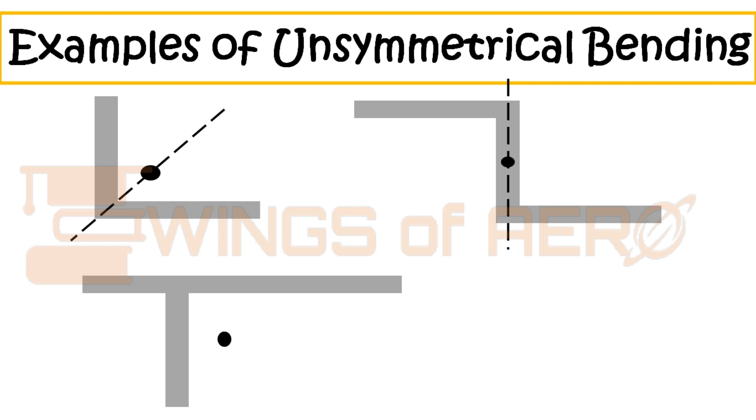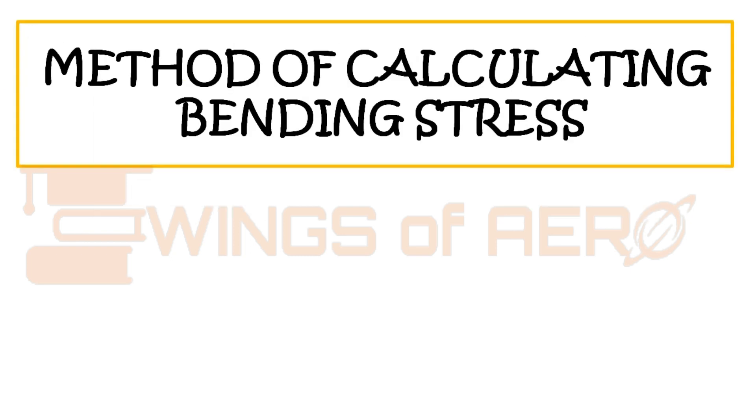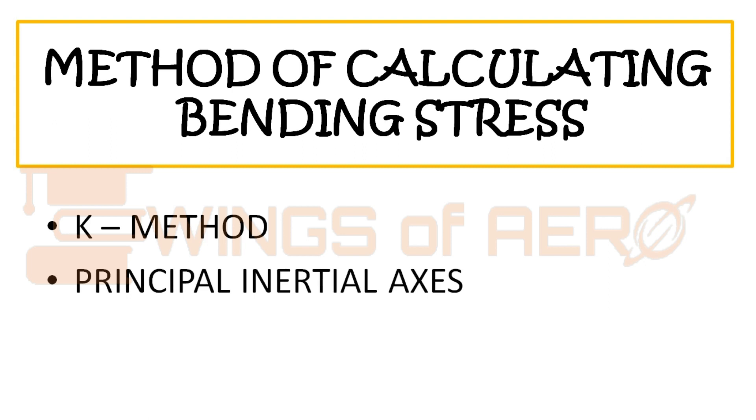Here are a few methods, three methods of calculating bending stress. The first one is K method. Second one is principal inertial axis. And the third one is neutral axis.